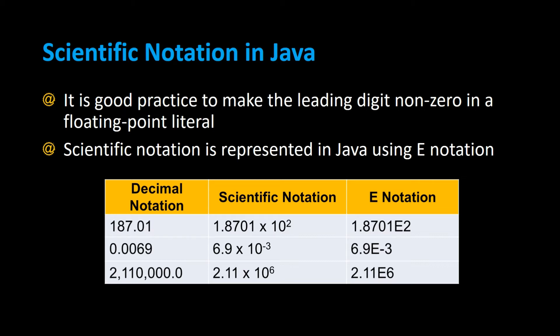And then 2,110,000 would be represented as 2.11 times 10 to the sixth power, meaning you move the decimal six places to the right to get the original value. And in scientific e-notation in Java, that would be 2.11e6.